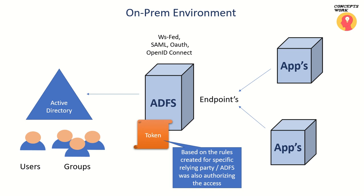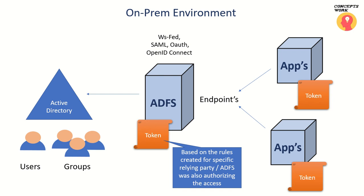Conditional access is not something new — we have been dealing with it for a long time because we were creating different claim rules on our relying party trust. For example, if a user is coming from a specific location and is part of a group named ABC, then only access should be allowed. In a nutshell, you are defining conditions where the authorization part decides whether a user should get access or not.